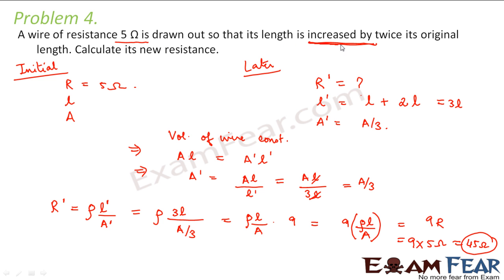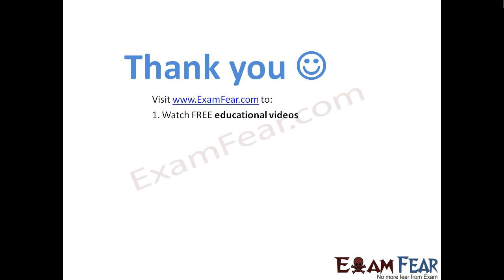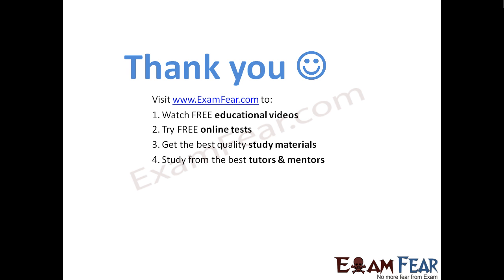The key catch in this problem was the phrase 'length increased by twice its original length.' Many students make the mistake of taking the new length as 2L, but the increase is twice the original length, so the new length is L plus 2L, which is 3L. Please visit examfear.com to watch free educational videos, try free online tests, get the best quality study materials, and study from the best tutors and mentors. Thank you.